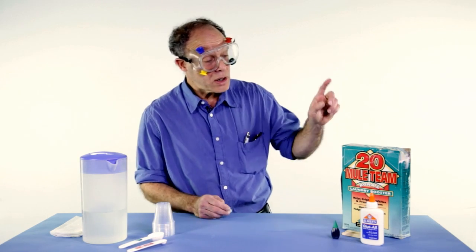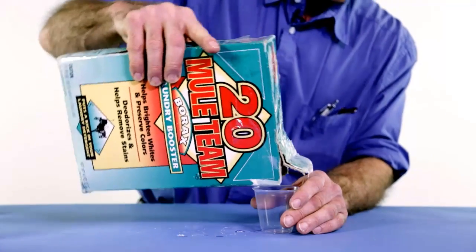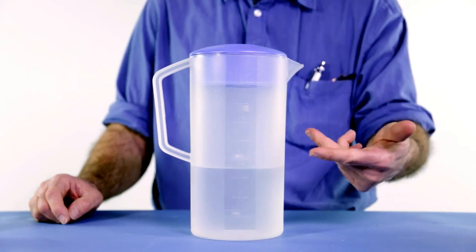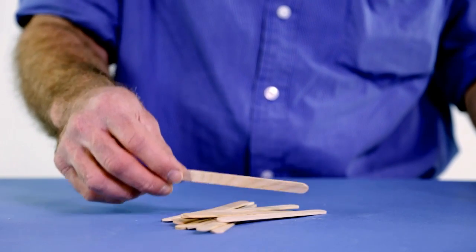You don't need much, you just need some stuff called borax, which you can get at the store, glue that you might have around the house, some water, and a popsicle stick. Now let's get started.